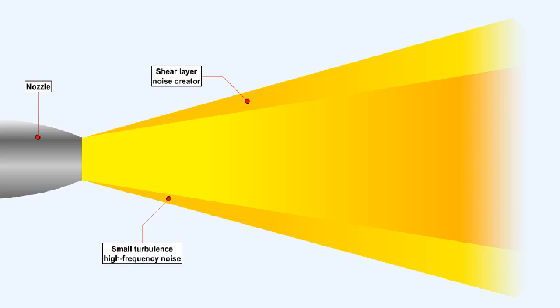Here, where the turbulence zone is narrow, is where the high frequency noise is being generated in the mixing pattern. And here, where the turbulence zone has widened, the low frequency noise is generated.